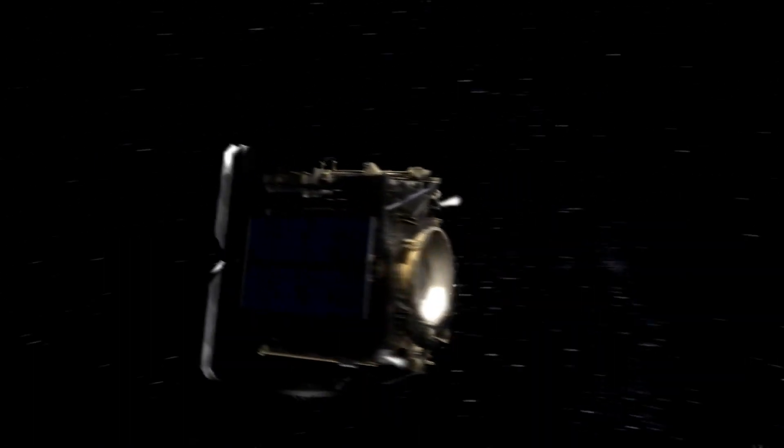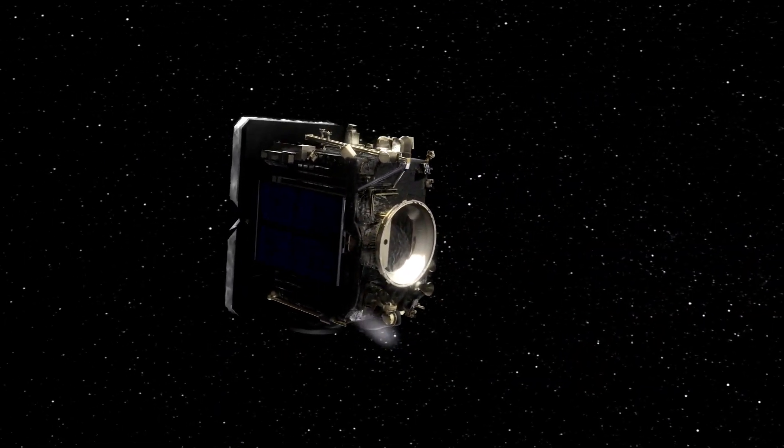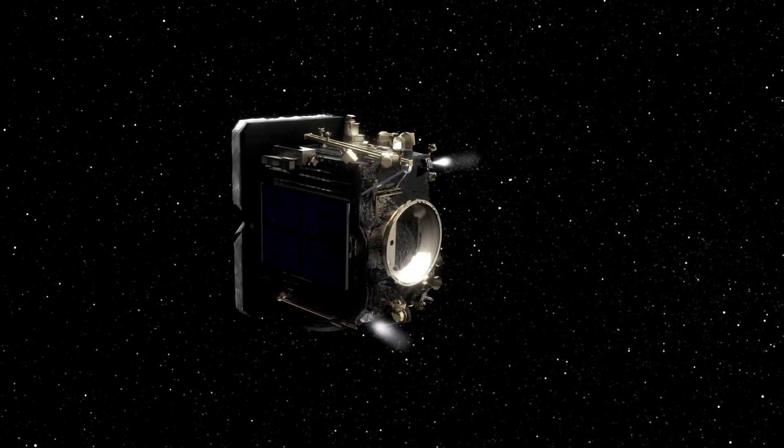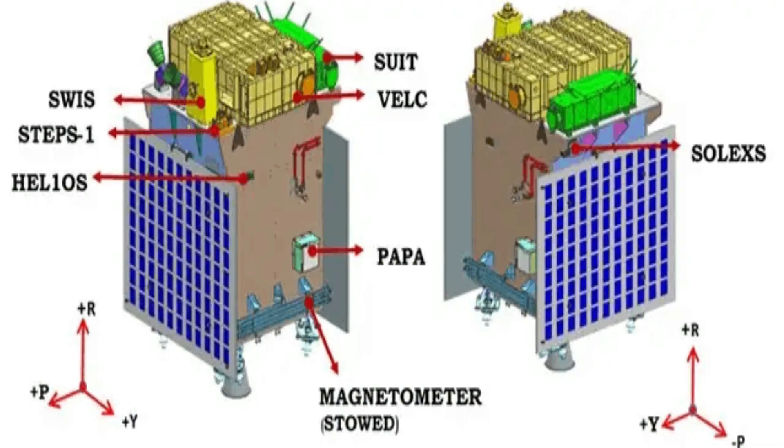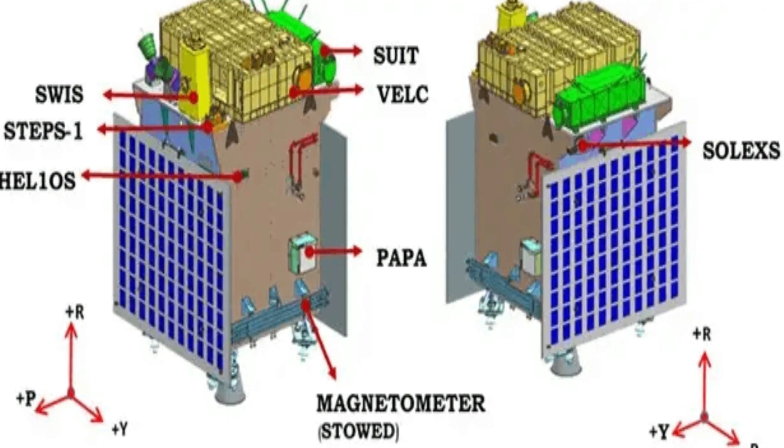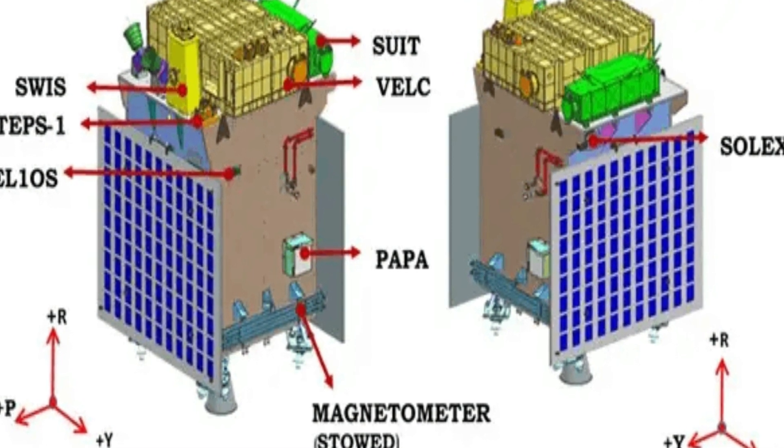ISRO laid the foundation of Aditya L1 mission in 2008. The mission aimed to send a coronagraph along with a satellite to study the Sun's coronal layer. However, in 2019, ISRO incorporated additional instruments into this mission.